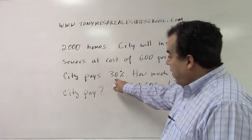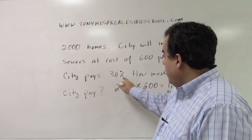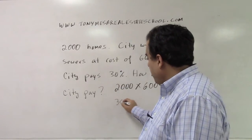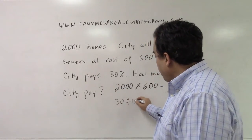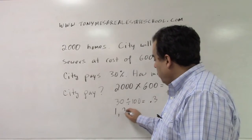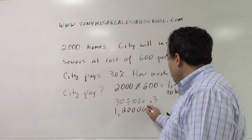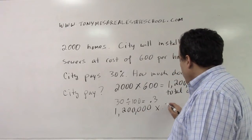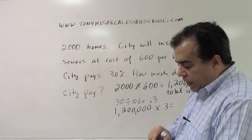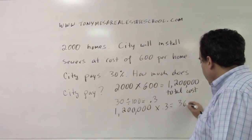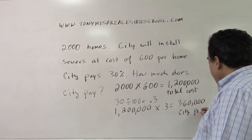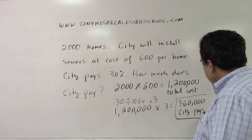They're asking how much does the city pay, and the city pays 30% of the total. So I take 30, divide it by 100, I get .3. If I take $1,200,000 and multiply it by .3, I wind up getting $360,000. That is how much the city pays, and that is the answer.